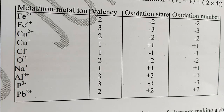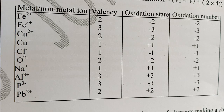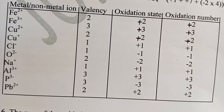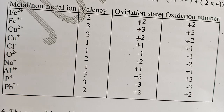Phosphorus has valence three and lead has valence two. When it comes to oxidation states, you must indicate the charge — positive or negative. For metals, the oxidation states are positive, corresponding to their valences. For non-metals, the oxidation states and oxidation numbers correspond to their valences and are negative.